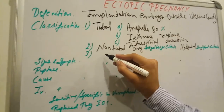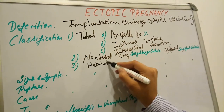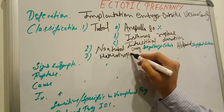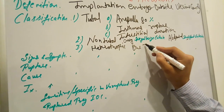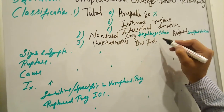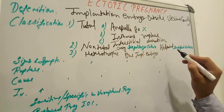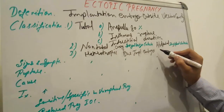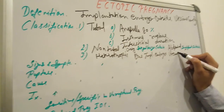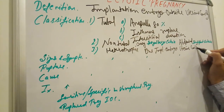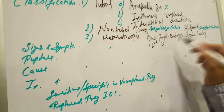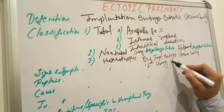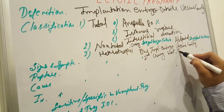Another type is heterotopic pregnancy. This means one embryo implants in the uterine cavity, and another embryo implants at an ectopic site outside the uterine cavity — so both pregnancies exist simultaneously.